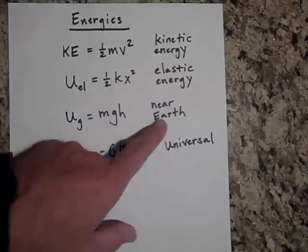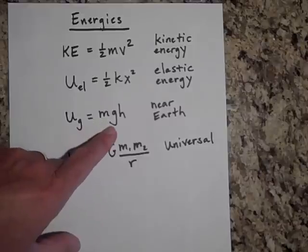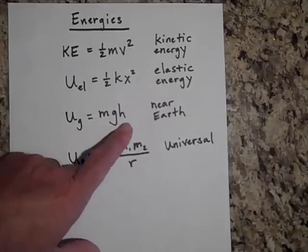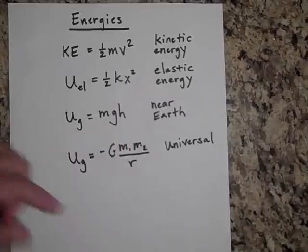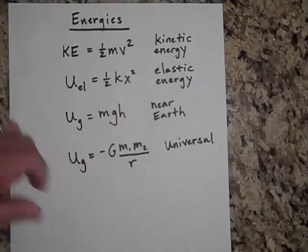The potential energy when you're near earth is equal to MGH, where M is the mass, G is the gravitational field or the acceleration due to gravity. And H is the difference in height between two spots. So this is really telling you a difference in potential energy between two spots that are H apart, a height H apart.